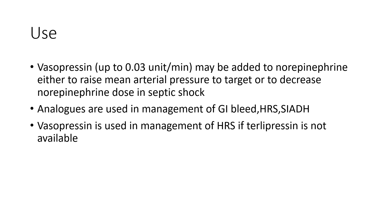Other uses include management of GI bleed, hepatorenal syndrome (HRS), and SIADH. Analogs of vasopressin have been used, and in conditions where terlipressin is not available, vasopressin can be used in the management of HRS. Overall, vasopressin is most useful in the management of septic shock.